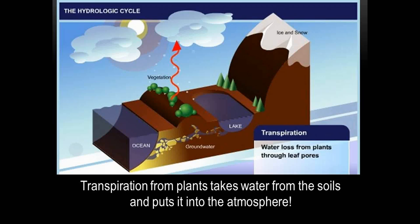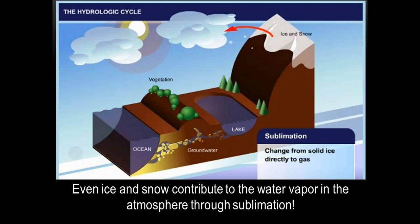Transpiration from plants takes water from the soils and puts it into the atmosphere. Even ice and snow contribute to the water vapor in the atmosphere through sublimation.